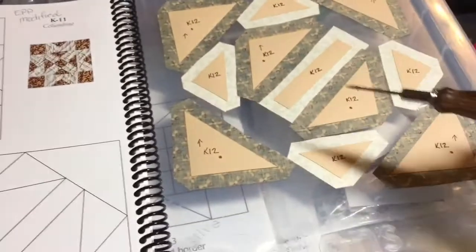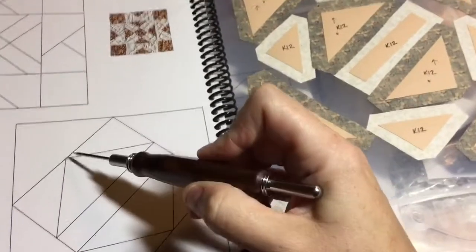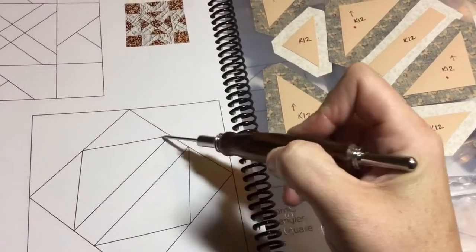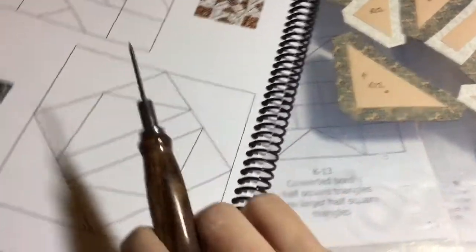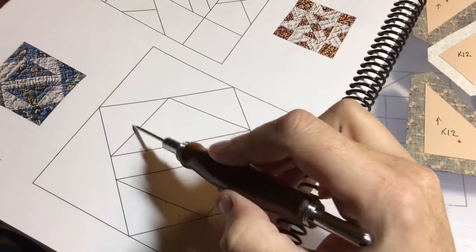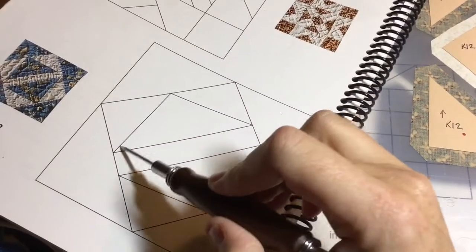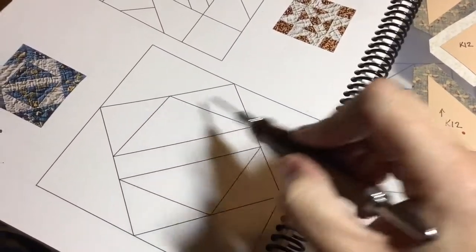These are our pieces, and if you notice, this is not an equal triangle. So essentially, if you look at it this way, we have a flying geese unit here. This is the central triangle, and then the two sides.